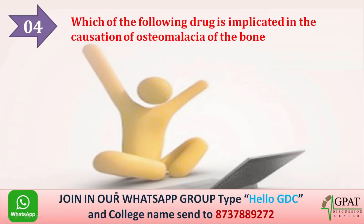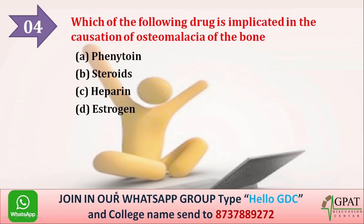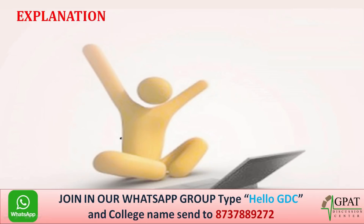Next question: which of the following drug is implicated in the causation of osteomalacia of the bone? Option A: phenytoin. Option B: steroids. Option C: heparin. Option D: estrogen. The correct answer is phenytoin — it is the drug implicated in causing osteomalacia.